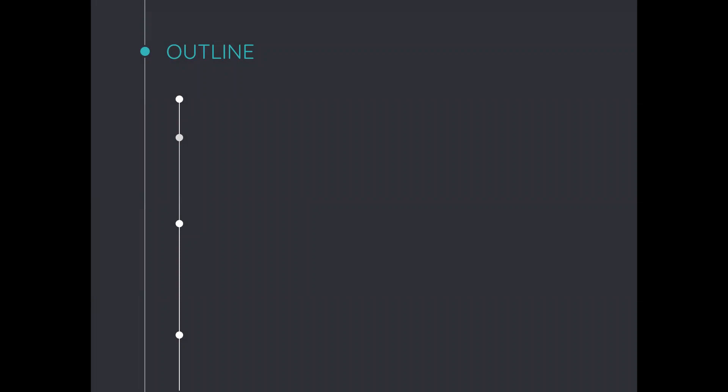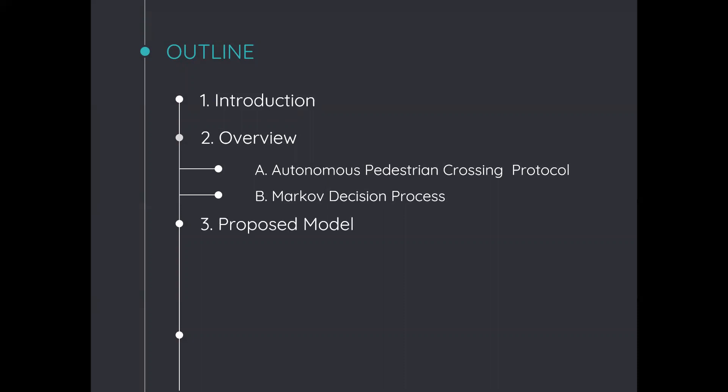The remainder of my presentation is the following. I will start with a quick introduction to the problematic, then I will give an overview of the autonomous pedestrian crossing protocol and of the Markov Decision Process. In the third section, I will present our proposed model, including state space, the action set, and the reward functions of our MDP. And I will finally finish with the discussion and the conclusion.